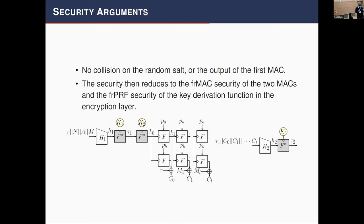For the security arguments, we assume no collision on the random salt and no collision on the output of the first MAC. If these collisions exist they are captured in the bound. When those conditions hold, security reduces to the fault resilience of the three layers.